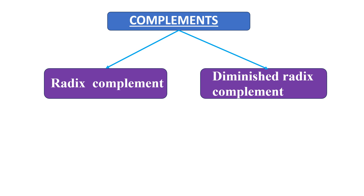For a base R system, there are two types of complements: radix complement and diminished radix complement. Radix complement is referred to as R's complement, and diminished radix complement is referred to as R minus 1's complement.